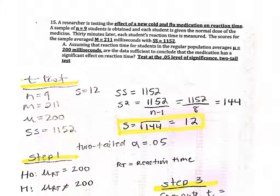We're going to have to first compute the variance. The way we compute the variance is we take 1,152 — the sum of the square deviations — as the numerator and divide by n minus 1. So we have 1,152 divided by 8, and we end up with 144. Then to get the sample standard deviation, we take the square root of 144, which equals 12.